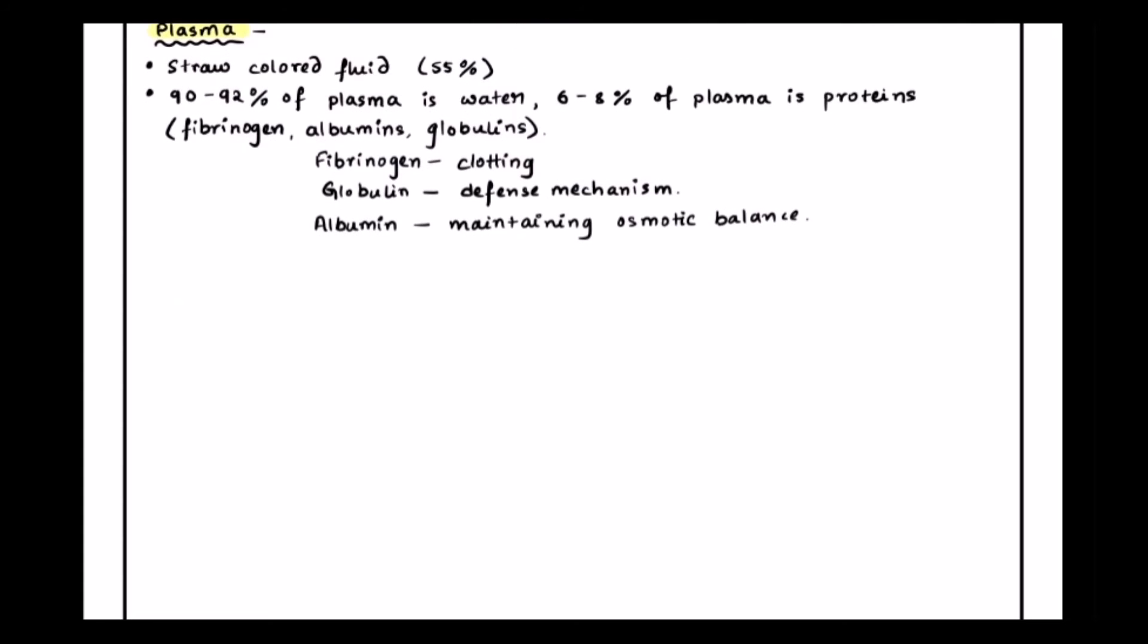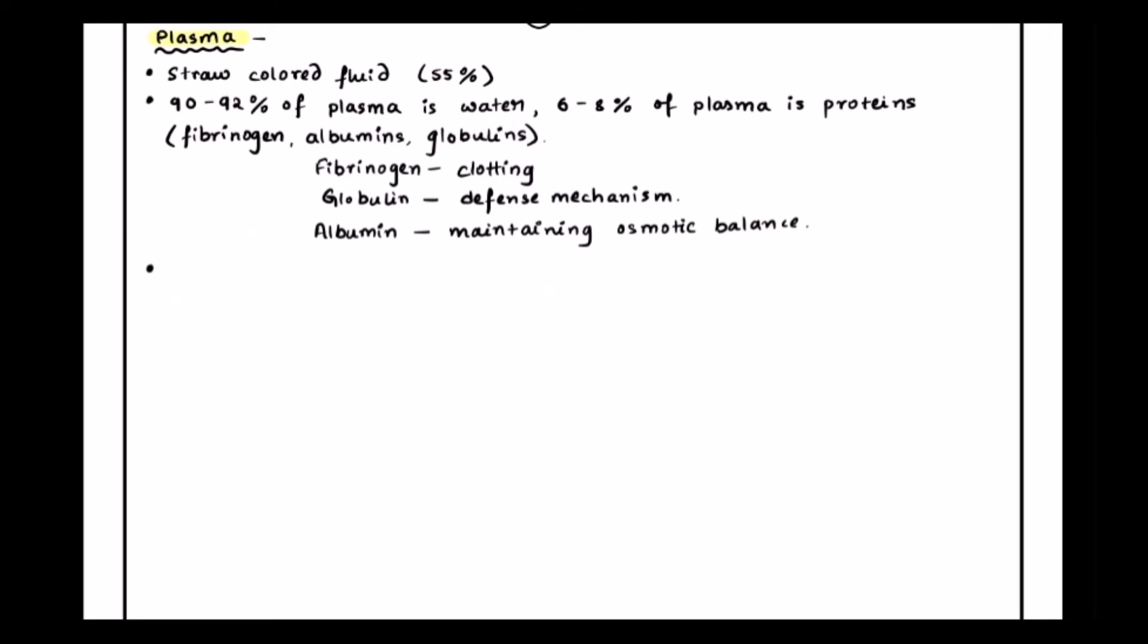The plasma also has some minerals like calcium ions, sodium ions, magnesium ions, HCO3 minus, Cl minus and other these type of nutrients. Other components that are present in the plasma are some trace elements of glucose, amino acids, and lipids.